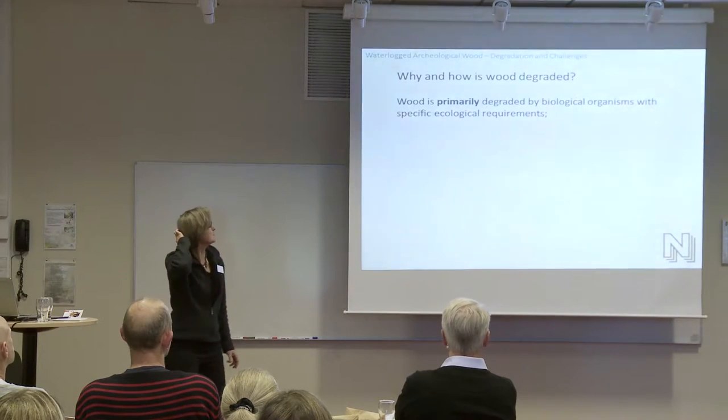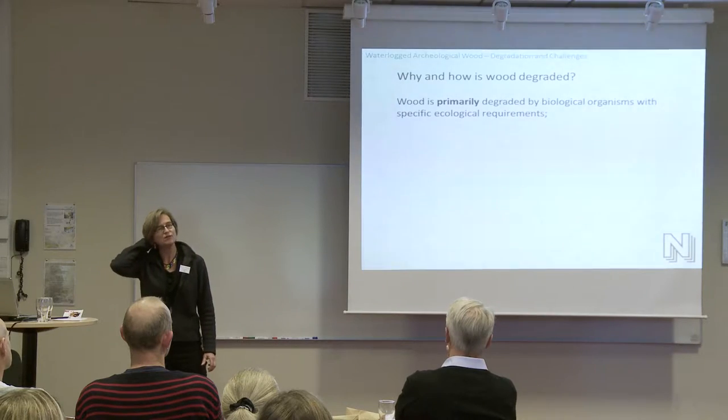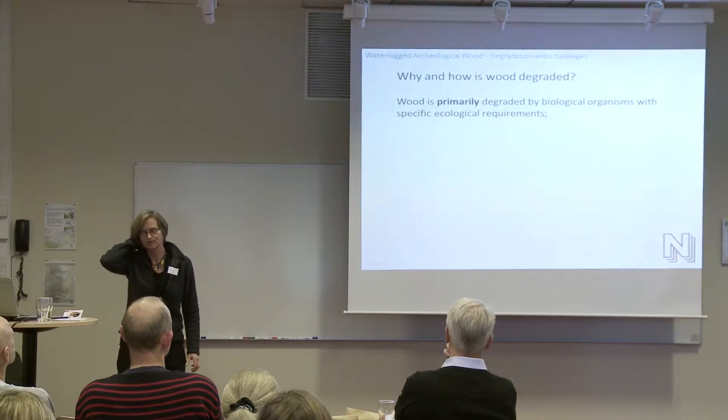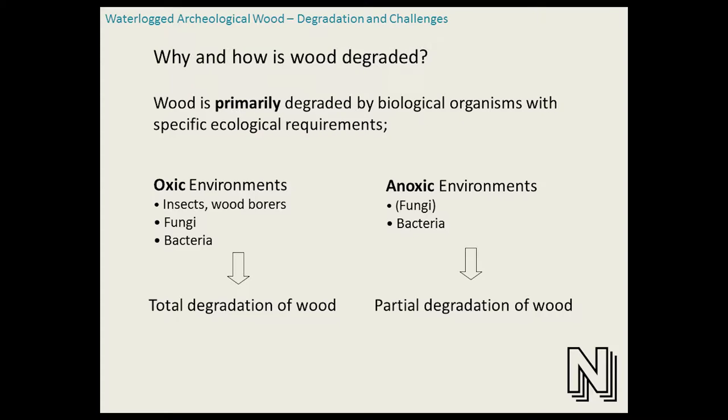Why is wood degraded, and how? Wood is primarily degraded by biological organisms, and these organisms have specific ecological requirements. In the oxic environment, wood will not last forever — it will degrade totally. The degraders are mainly insects, wood borers, fungi, bacteria, all kinds of rot. Whereas in the anoxic environment — in the marine environment — our enemies are fewer and less aggressive, and they only cause a partial degradation of wood.